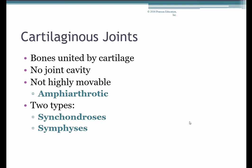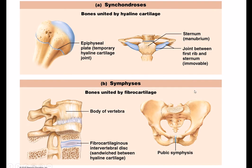Cartilaginous joints have bone ends united by cartilage and do not have a joint cavity, similar to fibrous joints in that way. They are considered amphiarthrotic by and large — a little movement, but not a lot, and certainly more than most fibrous joints. There are two types of cartilaginous joints, and the key difference is which type of cartilage is between the bone ends. Synchondroses have bone ends united by hyaline cartilage — the epiphyseal plate in growing bones is actually a temporary synchondrosis, as is the joint between the first rib and the sternum.